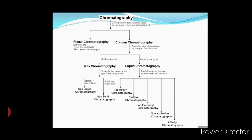Column chromatography is further divided into two classes based on the type of mobile phase: gas chromatography, where the mobile phase is gas, and liquid chromatography, where the mobile phase is liquid. Gas chromatography is further divided into two types: gas-liquid chromatography, where the stationary phase is liquid, and gas-solid chromatography, where the stationary phase is solid.